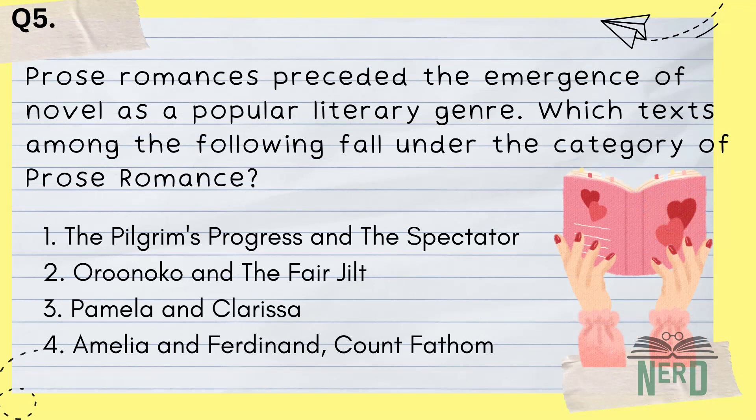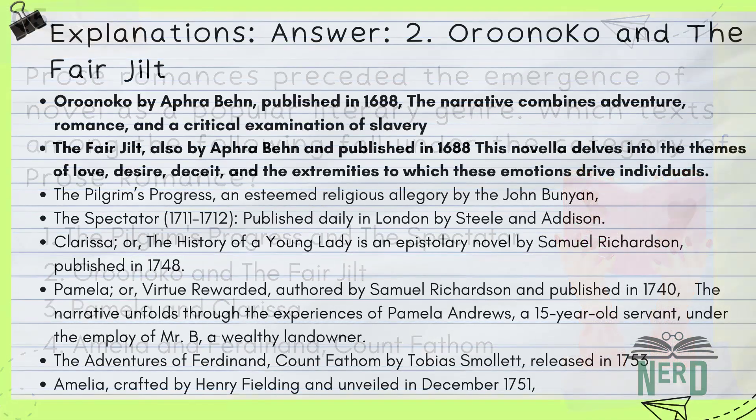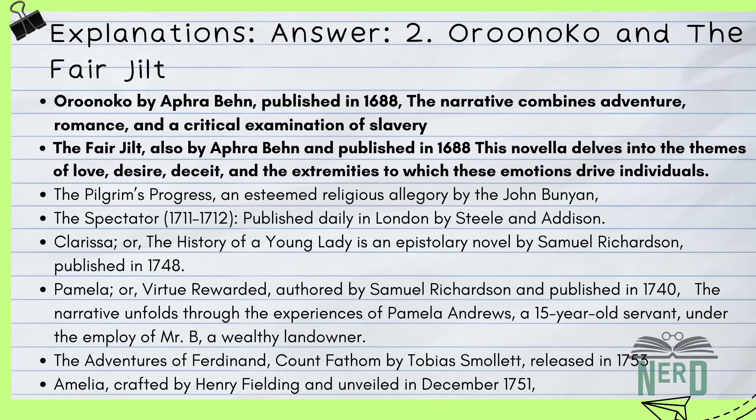Question 5. Prose romances preceded the emergence of the novel as a popular literary genre. Which texts among the following fall under the category of prose romance? 1) The Pilgrim's Progress and the Spectator, 2) Oroonoko and The Fair Jilt, 3) Pamela and Clarissa, 4) Amelia and Ferdinand Count Fathom. Answer: 2, Oroonoko and The Fair Jilt are your go-to examples when talking about prose romance, a kind of storytelling that was popular before the novel became the big boss of English literature.